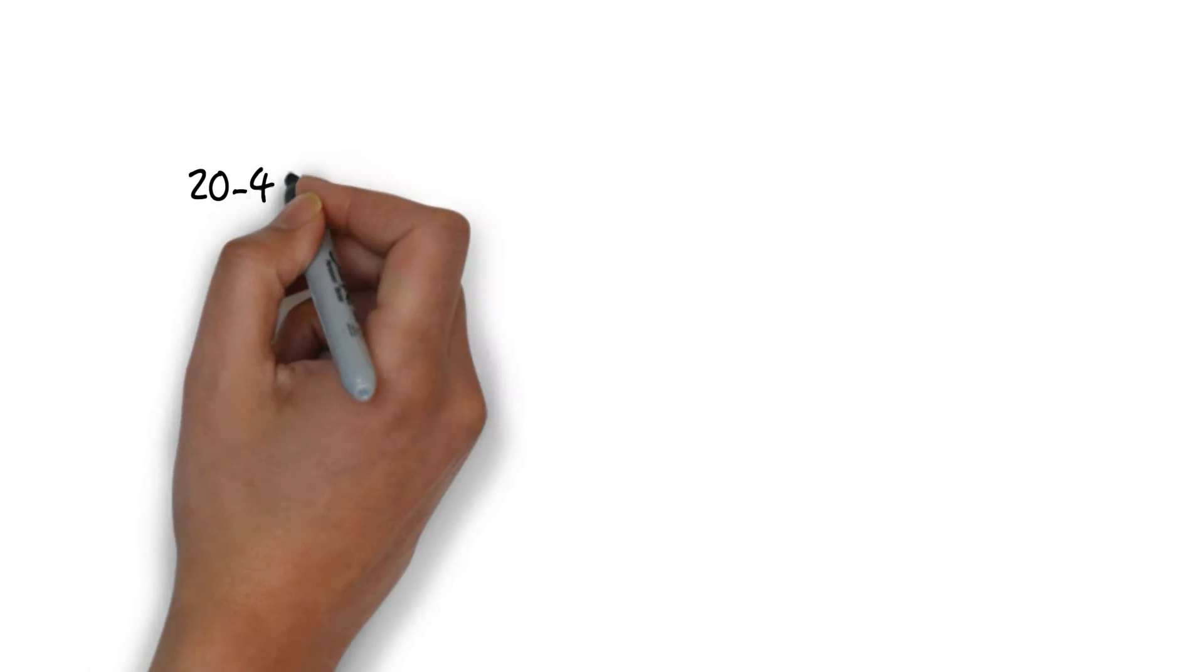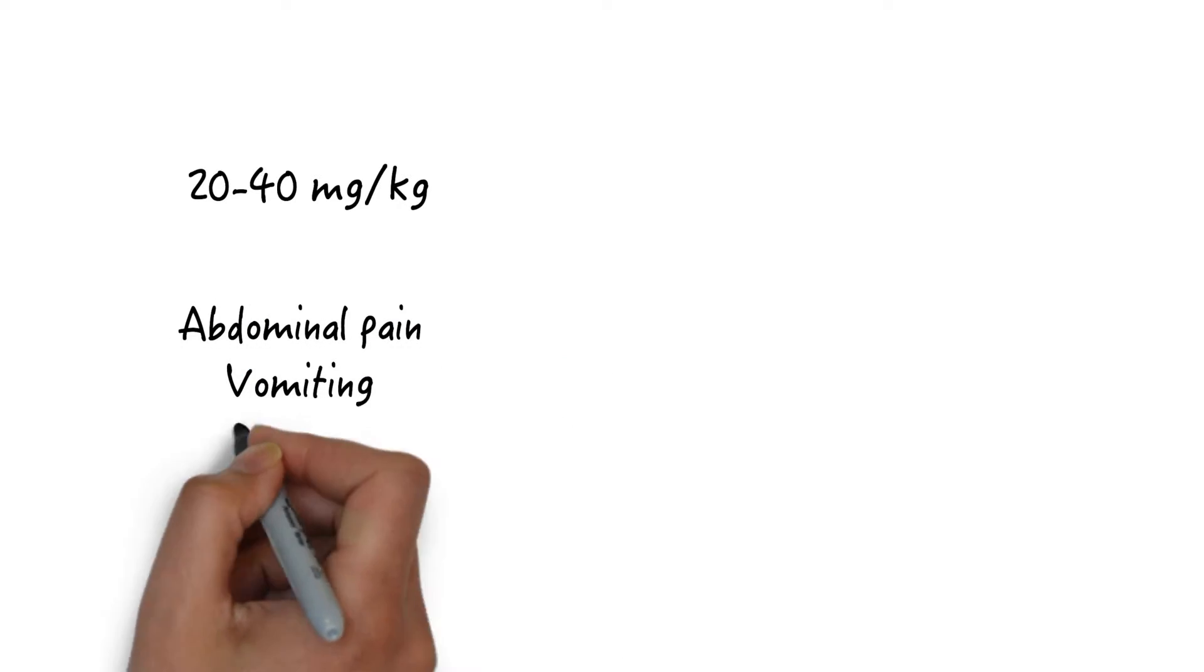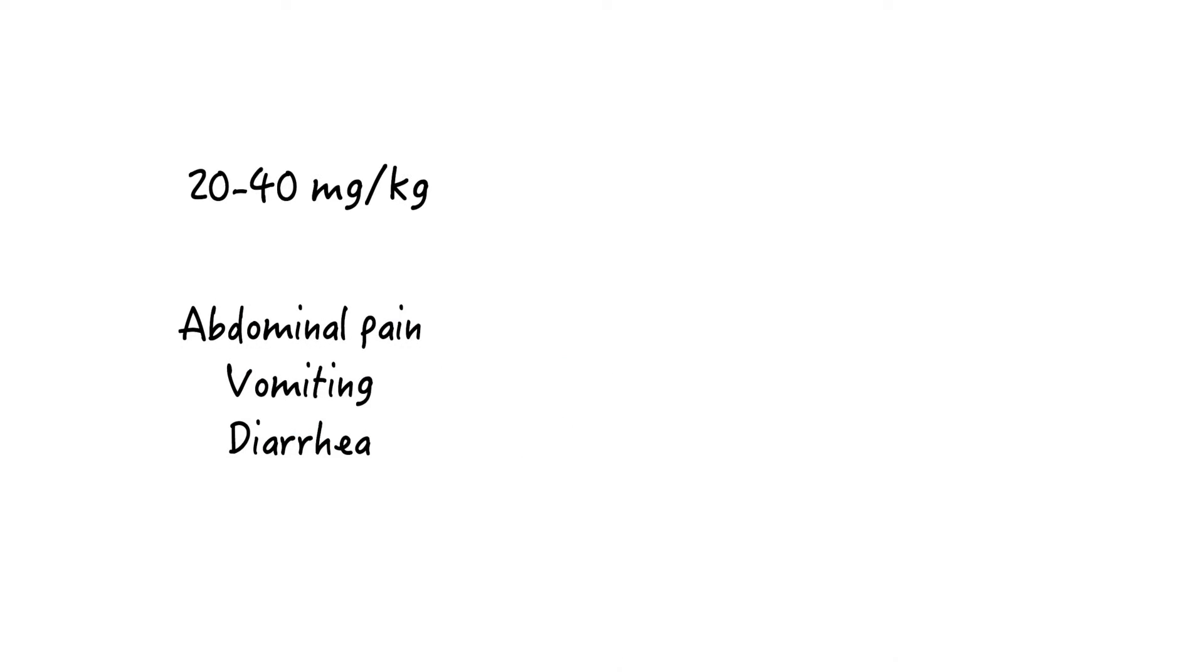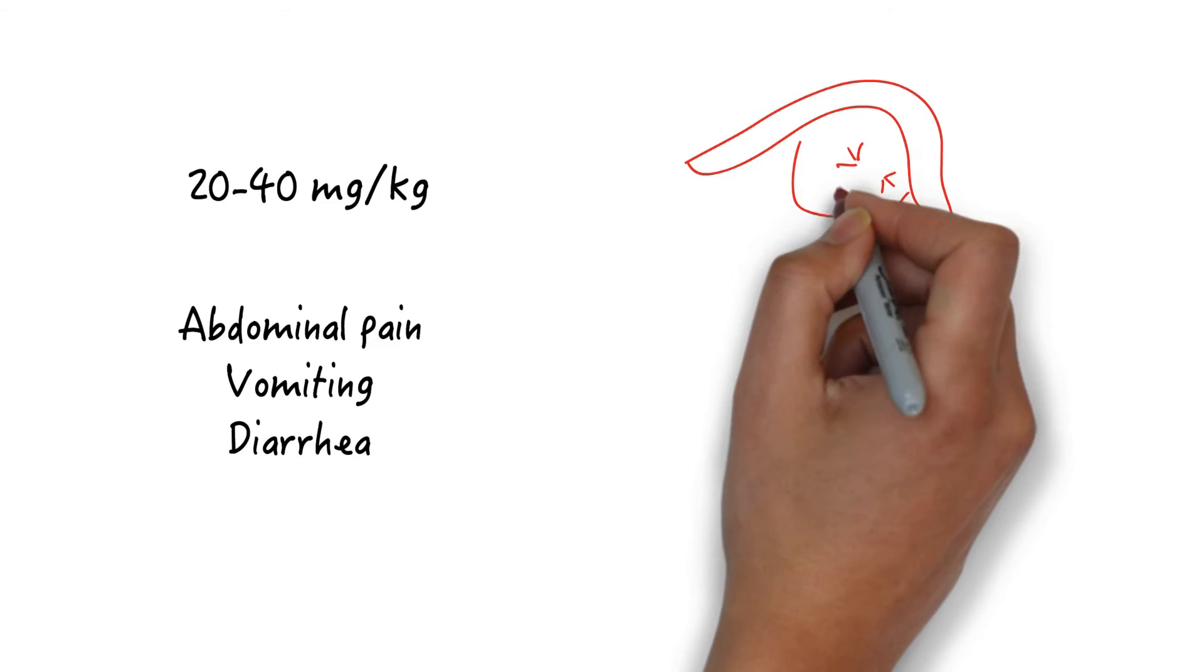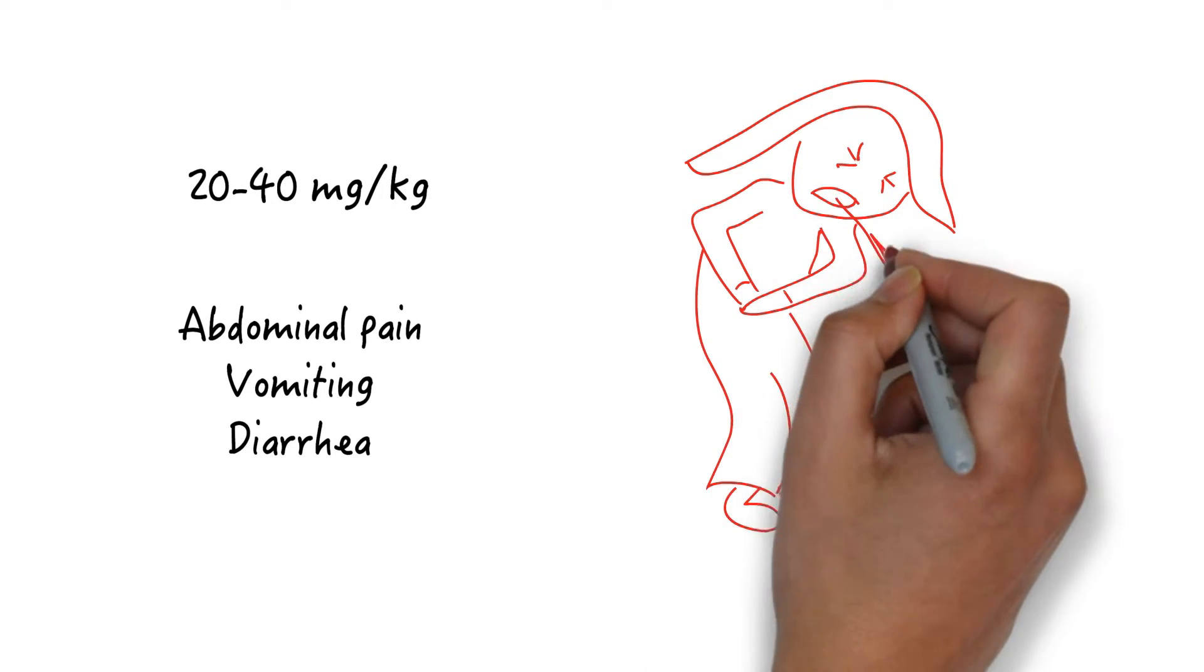A dose of 20 to 40 milligrams per kilogram can cause GI symptoms like abdominal pain, nausea, vomiting, and diarrhea, potentially even some hematemesis. This can develop from Mallory-Weiss tears or from true mucosal irritation.